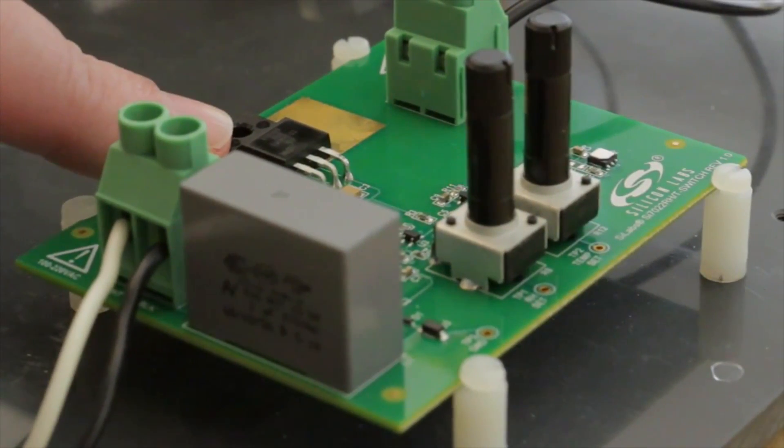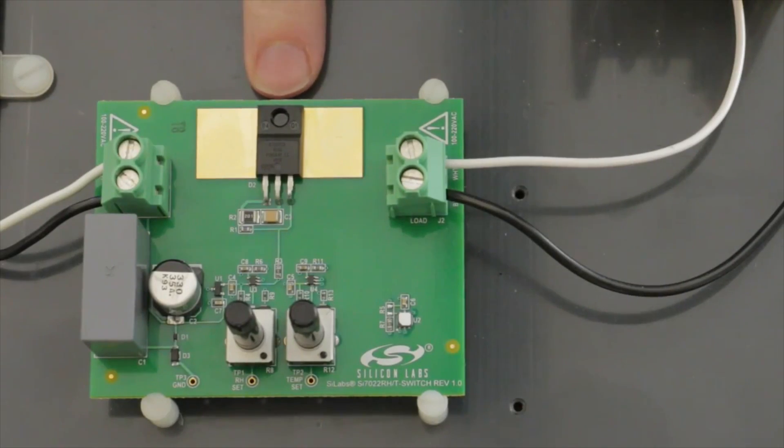The triac here switches the line voltage. This circuit will operate up to two amps of current through the switch, and that's turned on and off with the humidity and temperature threshold.